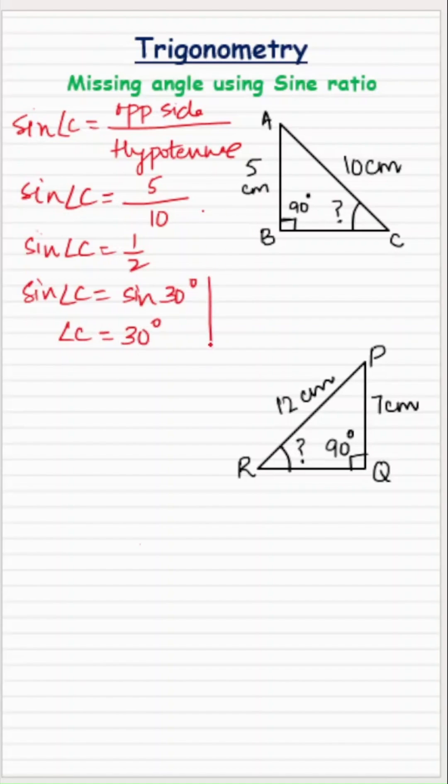Alternatively, you can do these steps like this also. If sine of angle C is 1 half, then angle C is equal to sine inverse of half.